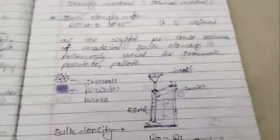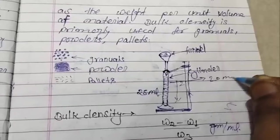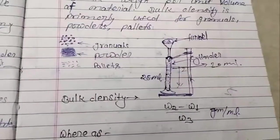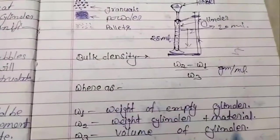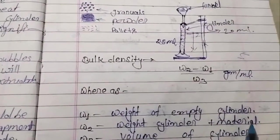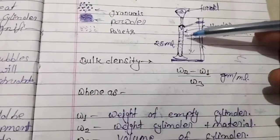cylinder. Then we weigh cylinder plus material when we fill the material inside the cylinder. We take the weight using a weighing balance or weighing machine. W1 is weight of empty cylinder, W2 is weight of cylinder plus material, and W3 is the volume of the cylinder.